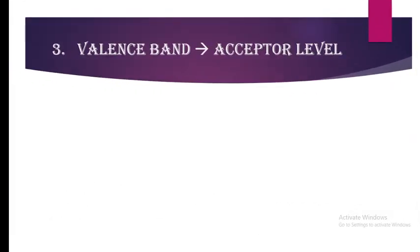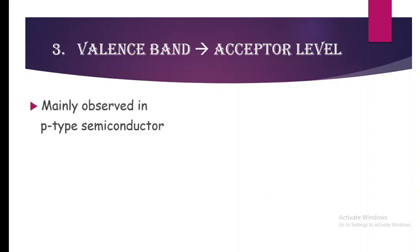The third type of transition is the transition of electron from the valence band to the acceptor level. This is mainly observed in P-type semiconductors because the acceptor level is present in P-type semiconductors due to doping with trivalent impurities within the intrinsic crystal lattice.